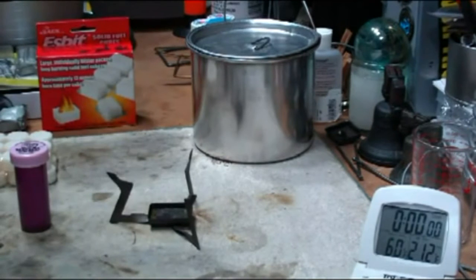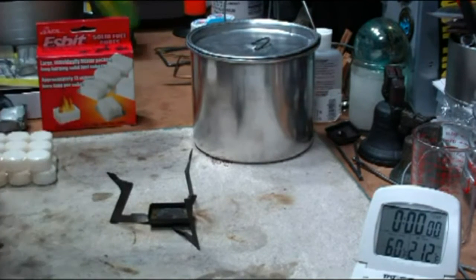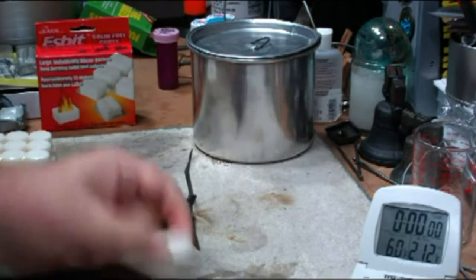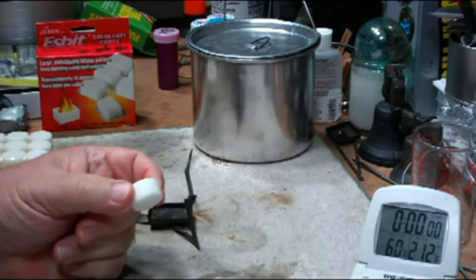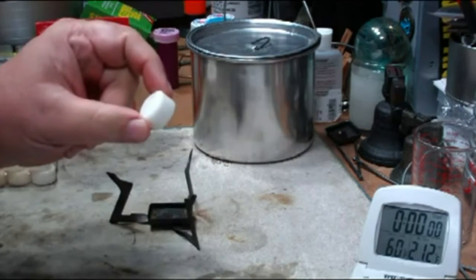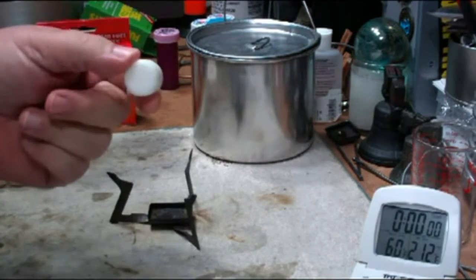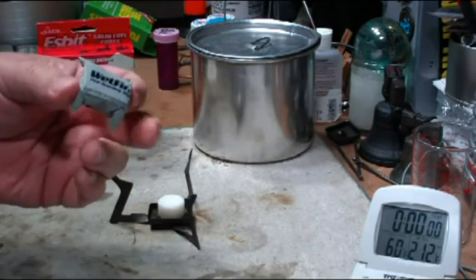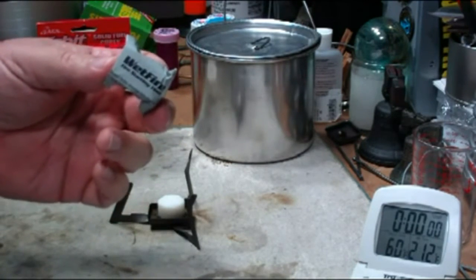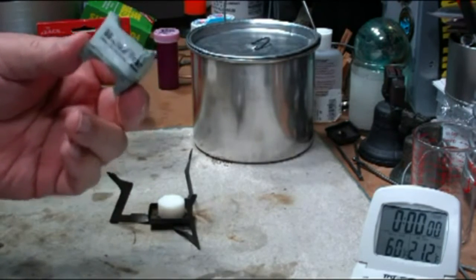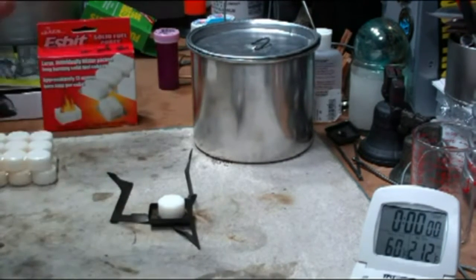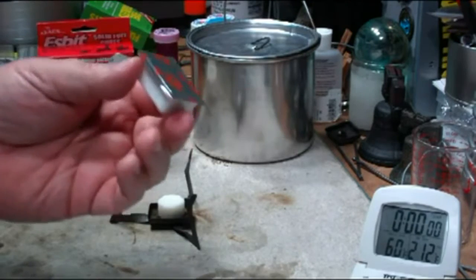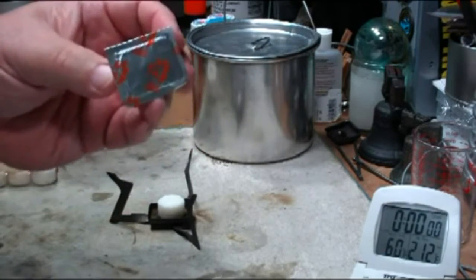So some weight comparisons on these. One tablet of the Coghlan's fuel tablets weighs about seven grams or 0.2 ounces or 0.014 pounds. Whereas the Wet Fire Tinder that I've used in the past weighs five grams or 0.15 ounces or 0.011 pounds. Pretty light, but sooty. And the Esbit cube weighs about 15 grams or half an ounce or about 0.09 pounds.